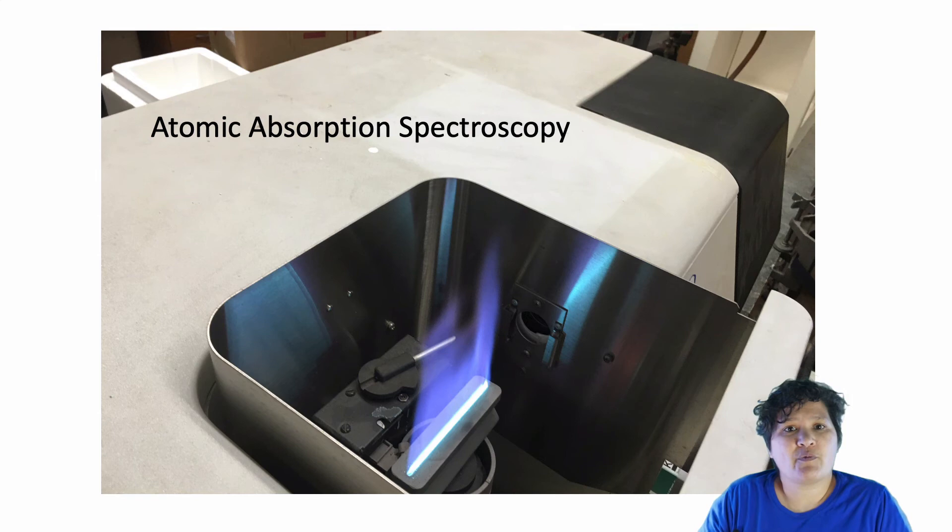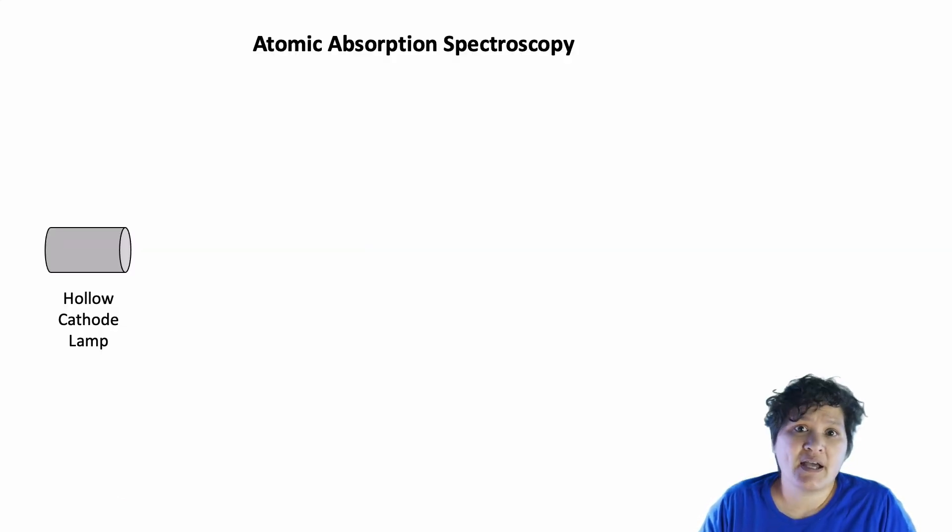The first instrument is what we call an AA, or atomic absorption spectrometer. As always, with spectroscopy, we start out with a source. Here, our source is what we call a hollow cathode lamp. Now, a hollow cathode lamp is specially designed to emit light in a very narrow band of wavelengths. But it doesn't quite work like UV-vis in that this lamp does not shine directly through the sample the way that a UV-vis spectrometer would.